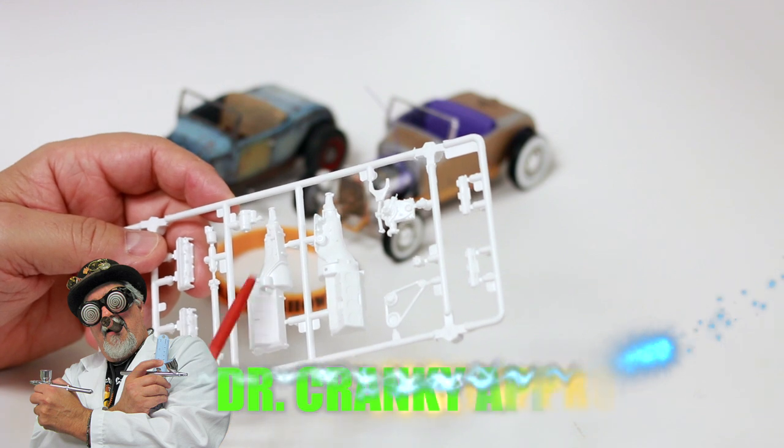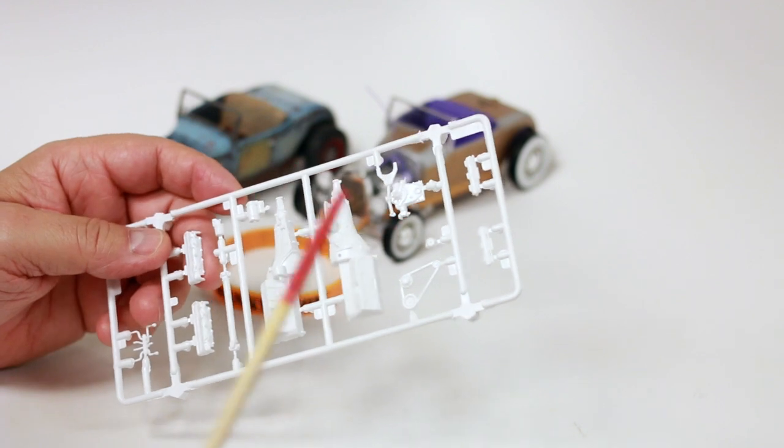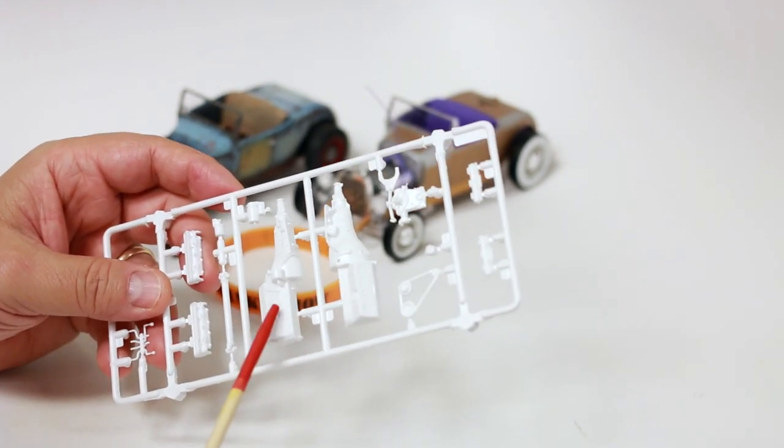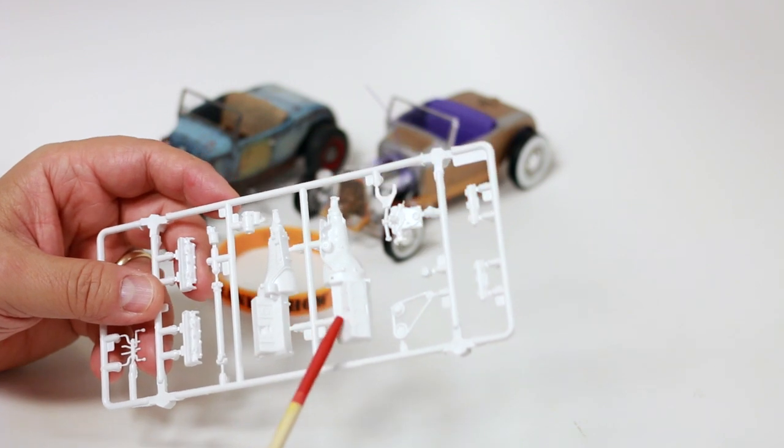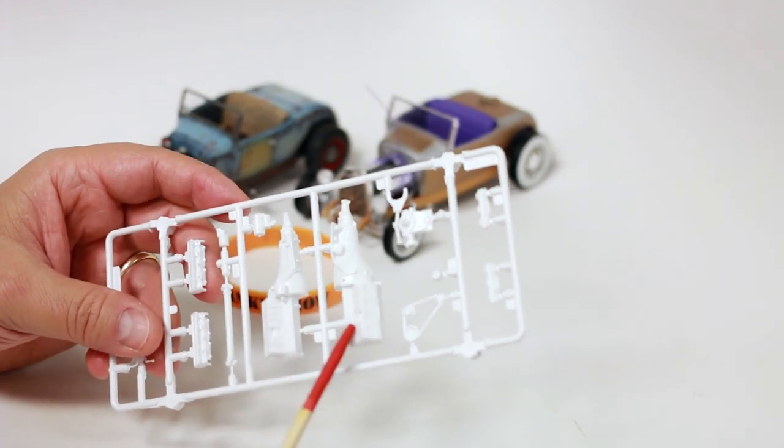I mean, I'm thinking of the Stacey David 32 and the 41 Willis. You could do it with any kit, really. But again, ease of use with this engine out of the Revell F29 kit.